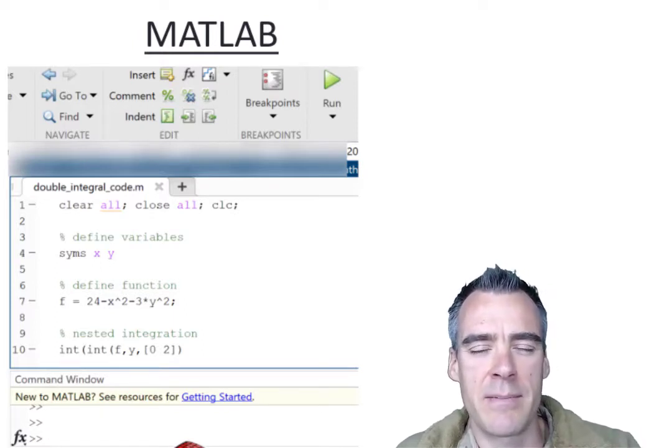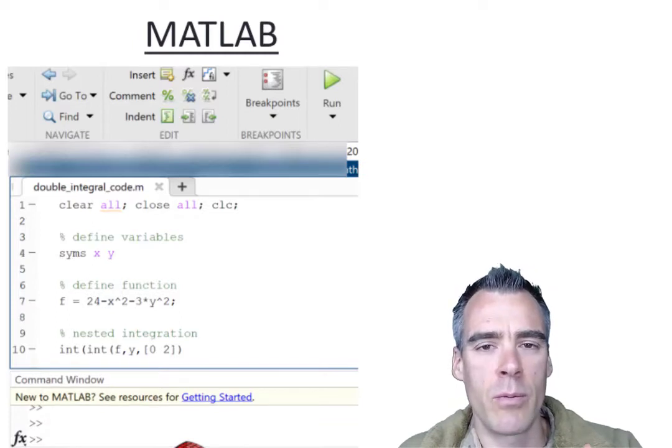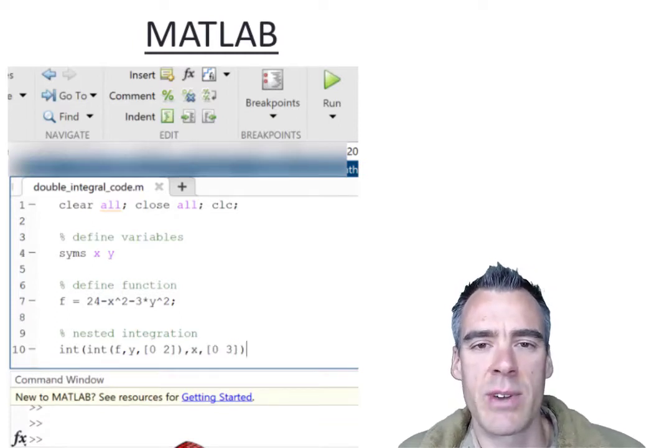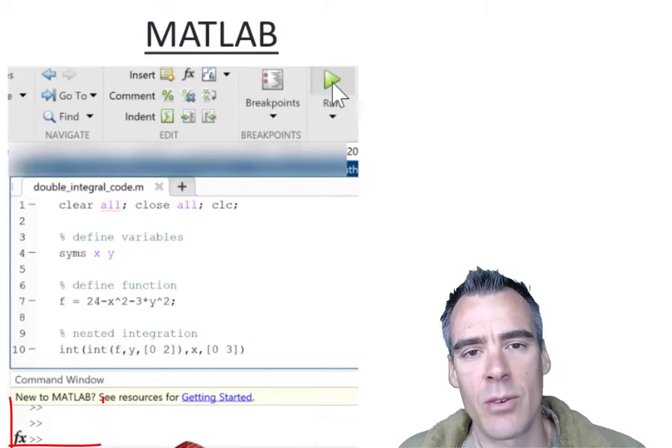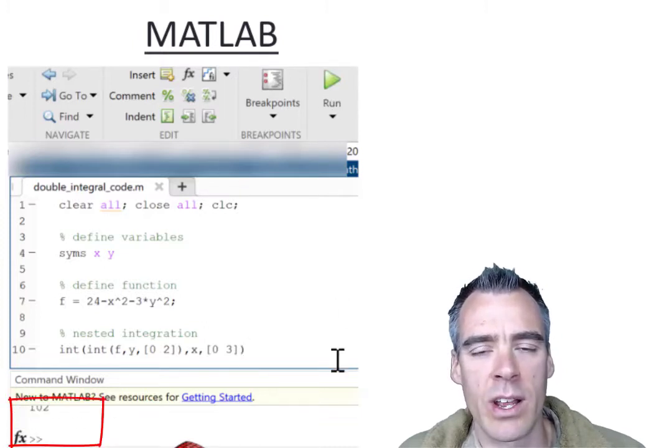and then we're going to evaluate that again in our outside integral, which is going to be of that inside integral with respect to x, where x ranges from 0 to 3. And evaluating that, we happily get 102.